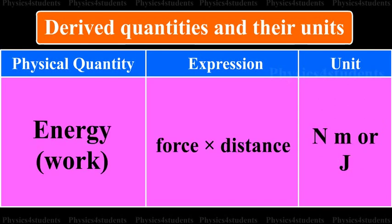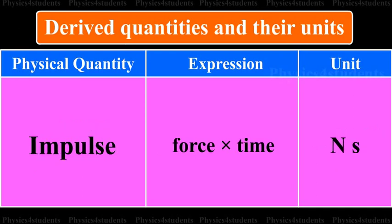Physical quantity is energy or work. Its expression is force into distance. Its unit is N m or J. Physical quantity is impulse. Its expression is force into time. Its unit is N s.